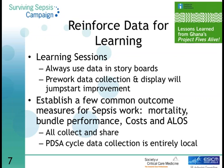Establish a few common measures in your spread project that all sites and units are going to collect — usually an outcome measure. You might want to look at mortality, bundle compliance, cost, and average length of stay in every single spread unit and every facility you spread to. Everyone agrees to collect these four measures and we'll see how we're doing as we go along and whether the changes we're making are resulting in improvement. Without agreement on common vital-few measures, it's really hard to judge the extent of spread and whether we're making a difference.